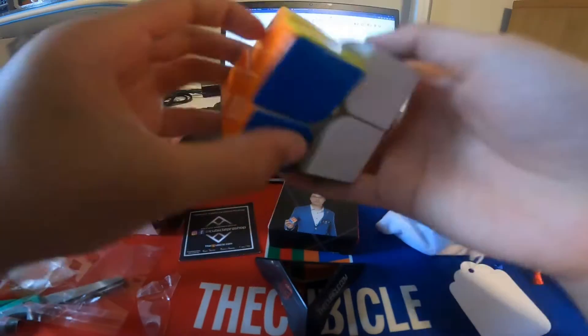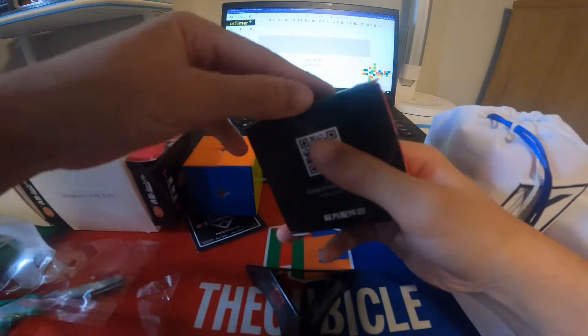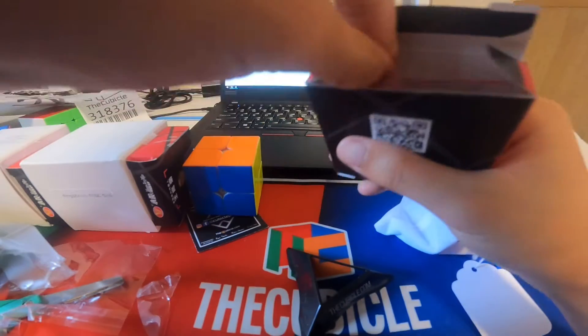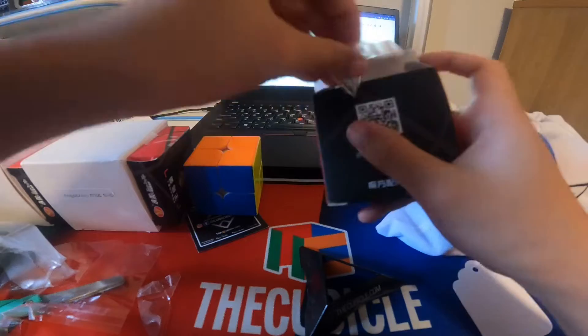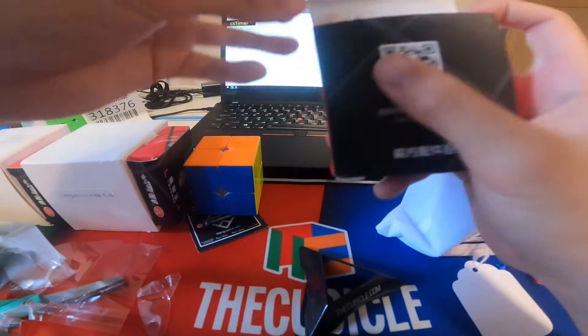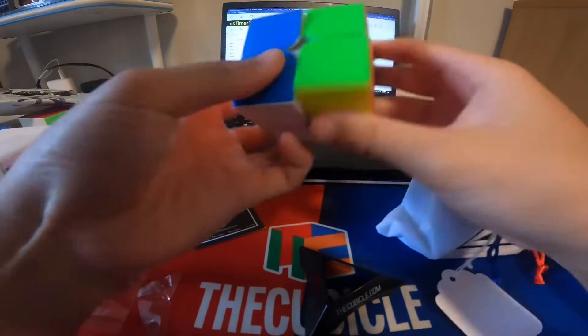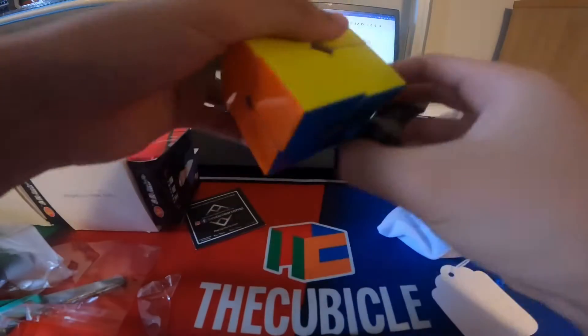So here in the accessories box, we have just some magnets, some springs, and a screwdriver. But yeah, let's move on to the next cube. This is a nice cube stand.